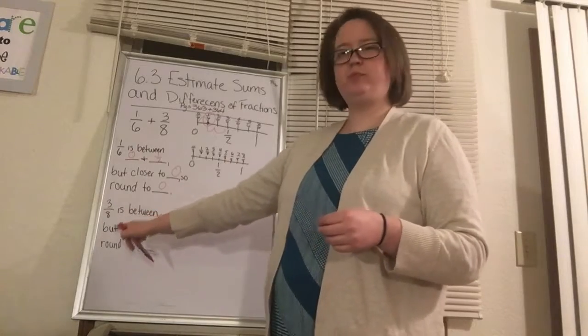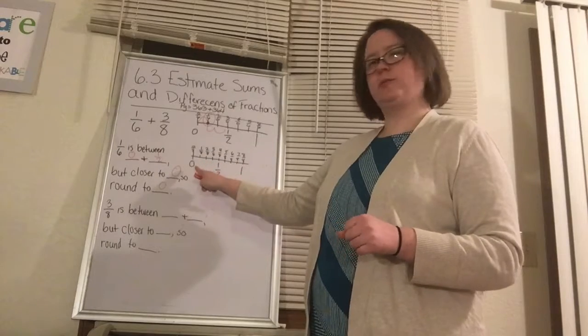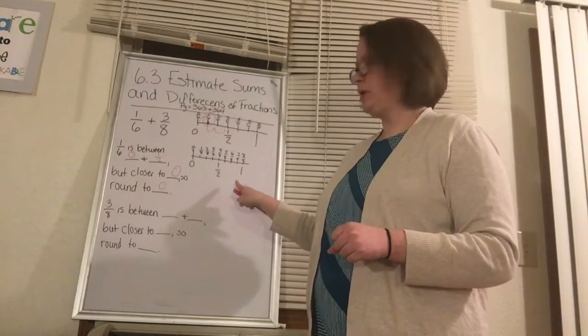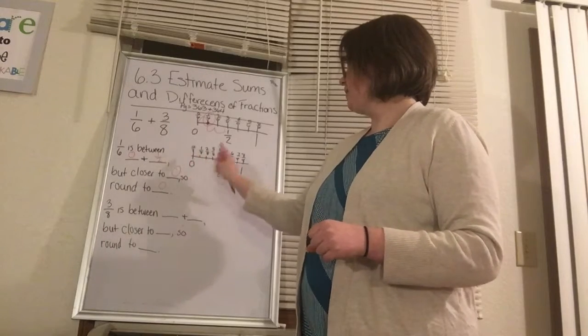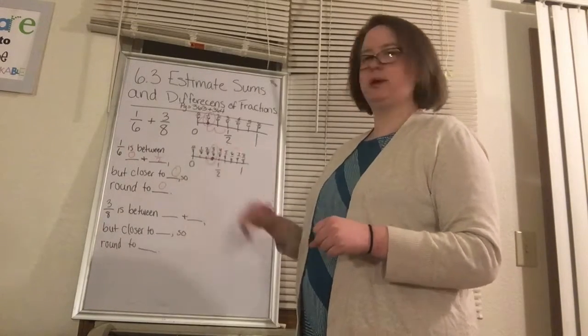Now, if we have 3/8, I have the number line made up again. We have our benchmarks of 0, 1/2, and 1. So we're going to find 3/8 on the number line, which is right here. I'll circle it to make it a little bit more obvious.